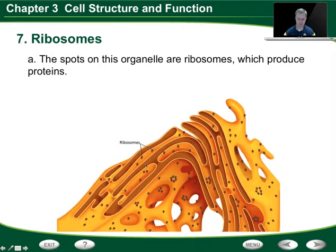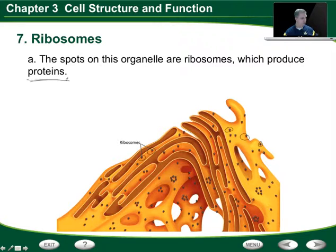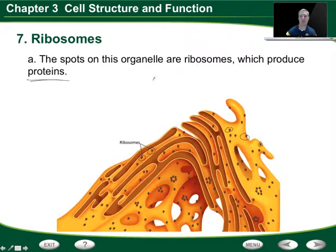Then we have ribosomes, which are found free in the cell and on the endoplasmic reticulum — all these little dots here are ribosomes. Ribosomes are vitally important because they produce proteins. Without proteins, we would be in serious trouble because proteins actually make up everything that we are. Ribosomes are those little factories that produce proteins, and remember: ribosomes themselves are produced in the nucleolus, inside the nucleus. So there's a connection where ribosomes produce the proteins that make up all the different structures of each organism.